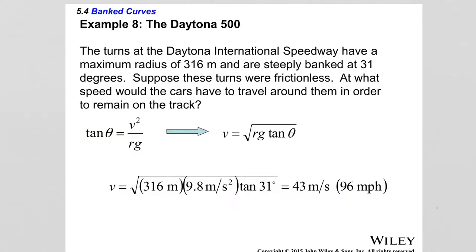Example: The turns at Daytona International Speedway have a maximum radius of 316 meters and are banked at 31 degrees. Assuming frictionless turns, at what speed must the cars travel to remain on the track? Using V = √(R × g × tanθ) and substituting the values gives 43 meters per second, or 96 miles per hour — the speed at which cars won't slip.